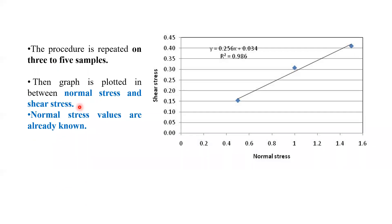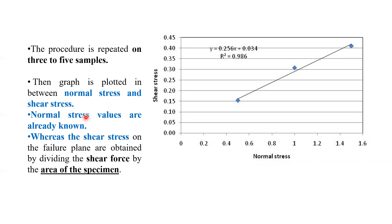For each normal stress (0.5, 1.0, and 1.5 kg/cm²), we find out the corresponding values of shear stress. Normal stress is known, and shear stress is found as load divided by area, where the surface area is 6 cm by 6 cm. Once we find normal stress and shear stress, we plot the graph between them. When the line is extended, it cuts the y-axis — that intercept is cohesion, and the angle the line makes with the horizontal is the angle of shear resistance.